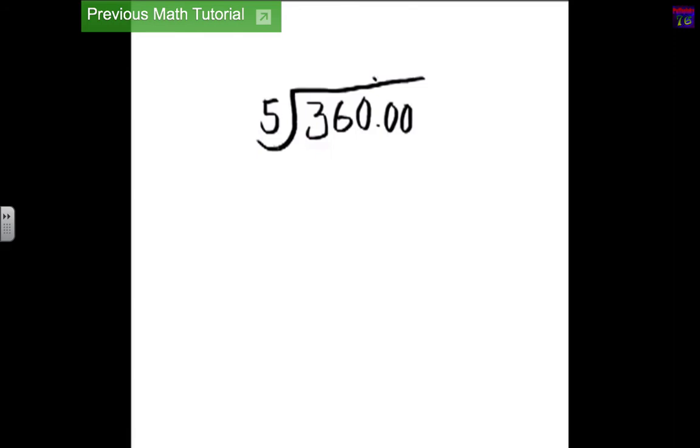And 5 can go into 36 seven times. 5 times 7 equals 35. And then you subtract. 6 minus 5 equals 1. 3 minus 3 equals 0. Bring down the 0.